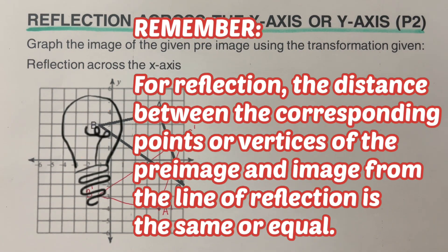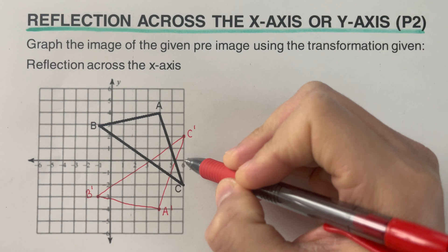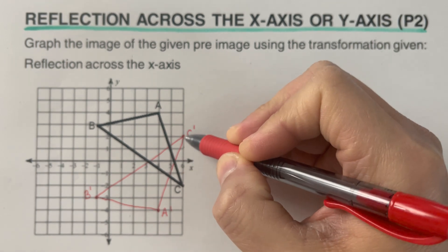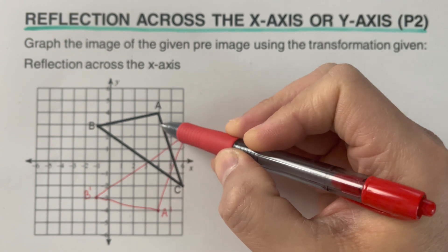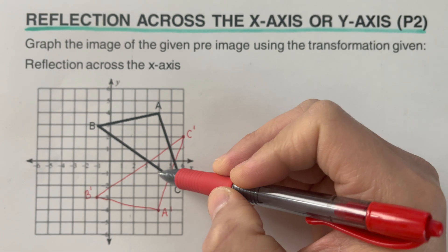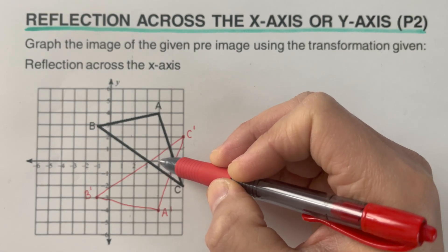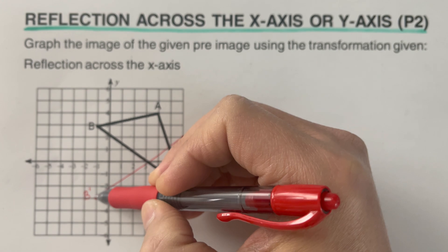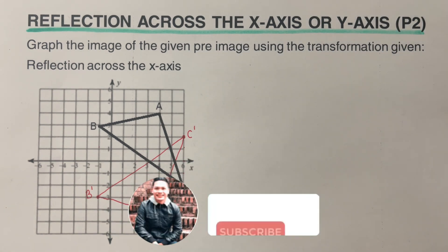Notice that the distance between two corresponding vertices from the line of reflection is the same or equal. The distance of C from the line of reflection is 2, so the distance of C prime is also 2 — they are equal. For vertex A, the distance from the line of reflection is 4, and A prime is also 4 from the line. For B and B prime, the distance is 3 in each direction — one above and one below — because they are on opposite sides.